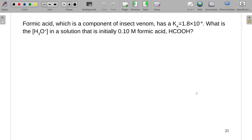Formic acid has a Ka of 1.8 times 10 to the negative fourth. What is the H3O plus concentration in a solution that is initially 0.1 molar formic acid?